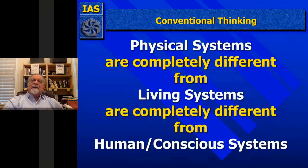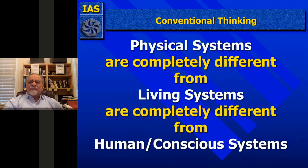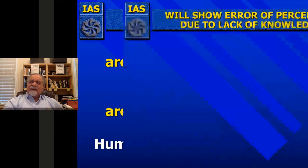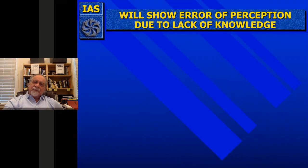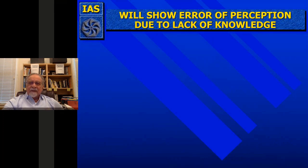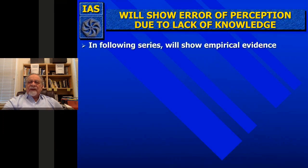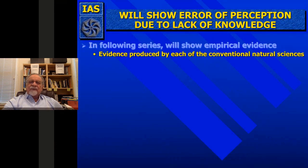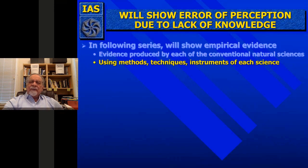The conventional, reductionist way of thinking is that physical systems are completely different from living systems, which are completely different from human or conscious systems. This actually shows that that is not true—that was an error, just like it was an error to think the earth was flat. We'll show empirical evidence for each emergent new level using the methods, techniques, and instruments of each of the sciences involved—biochemistry, astronomy, and so on.